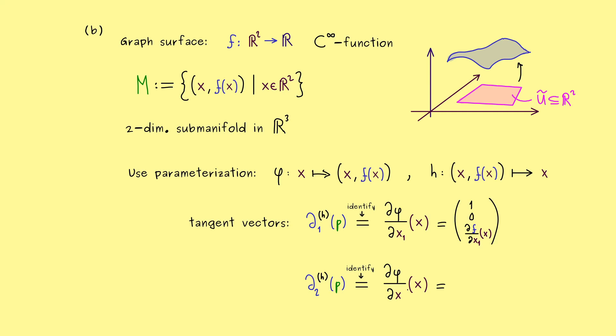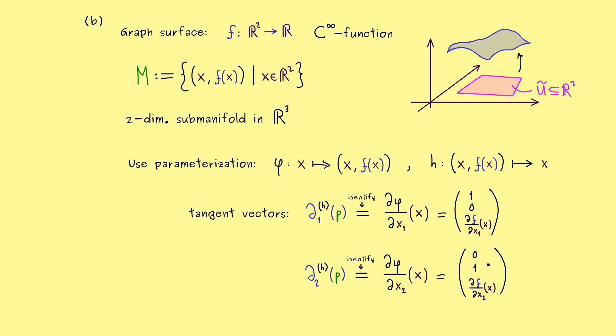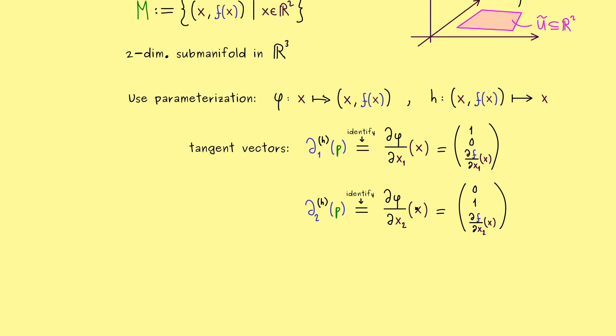And the second one is already the last one and we just have to change 1 to 2. And then we just get a vector which is 0, 1, partial derivative of f again. And obviously here the partial derivative with respect to x₂. And that's it. And there you can already see, generalizing that to an n-dimensional graph surface is not complicated at all. You just have n tangent vectors, where you shift the 1 through the vector.